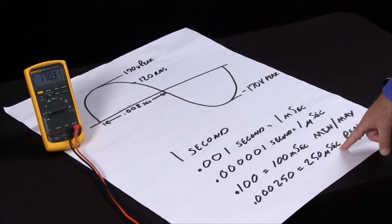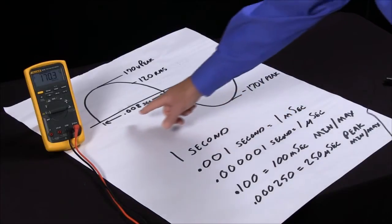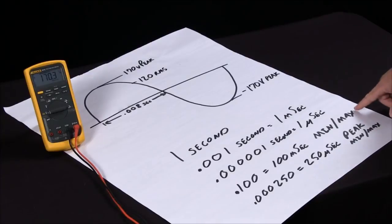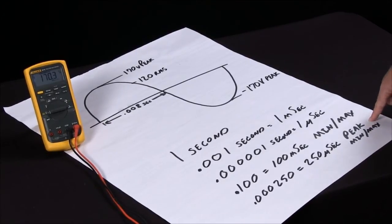When we work with a 60 hertz sine wave, half of that sine wave stretches eight milliseconds across. So my min max is not fast enough to capture transients, but the peak min max does give me that capability to capture electrical transients on different types of waveforms.